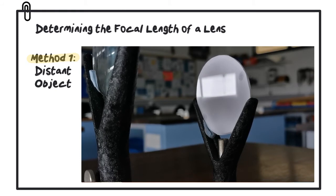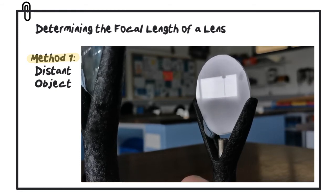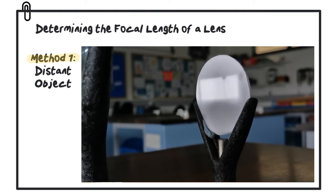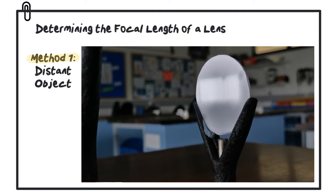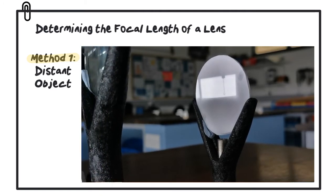You should even be able to see the large mass hanger sitting on the windowsill. Notice that the mass hanger looks upside down - that's because the image being created here is inverted.